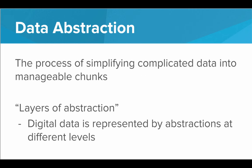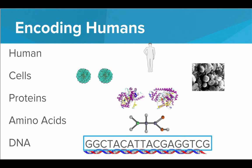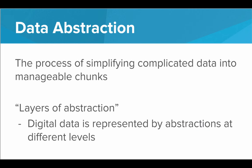And this brings up the idea of data abstraction. Data abstraction is the process of simplifying complicated data into manageable chunks, and when we do this we build out these layers of abstraction. Digital data is represented by abstractions at different levels. In the human body example, cells would be one layer of abstraction — cells don't really have to worry about what's going on at the DNA level, only how to interact with each other and what proteins they're made of. At the protein level, proteins don't have to worry about what cells they're part of — just exactly which amino acids build them. So these are the different layers of abstraction present in the human body.